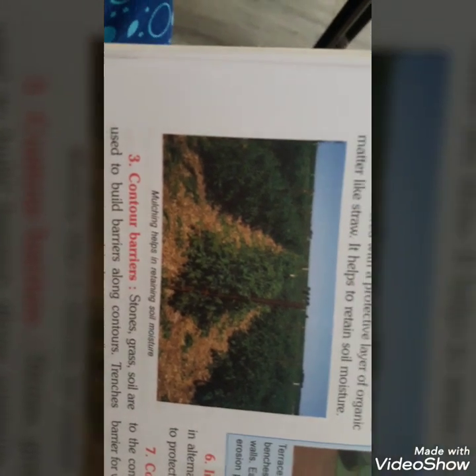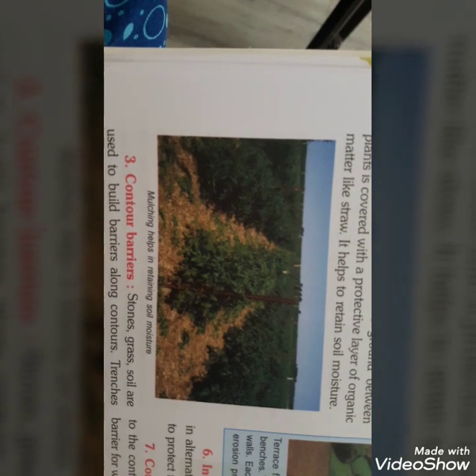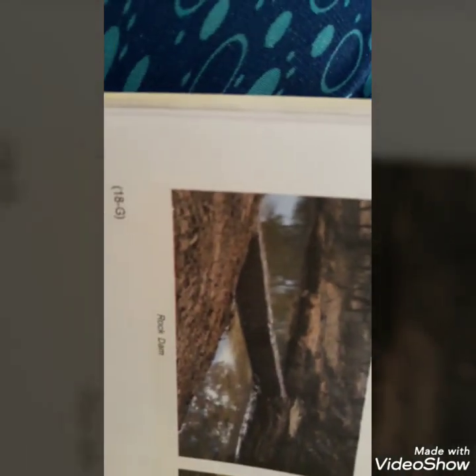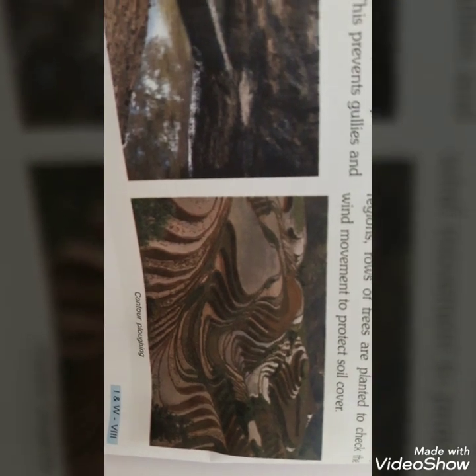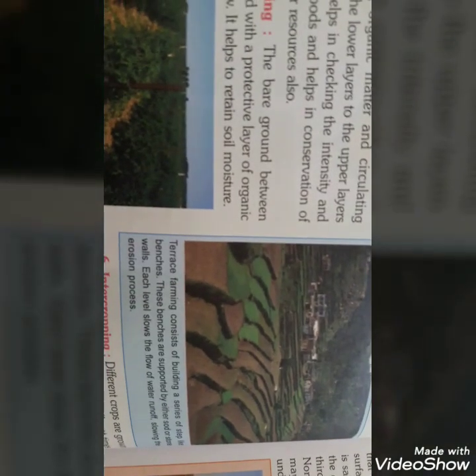Students, this is mulching — जब plants के बीच में organic matter की straw-type layer तैयार की जाती है। This is rock dam — जब पत्थर से दीवार बना दी जाती है पानी का बहाव रोकने के लिए। This is counter ploughing. And this is terrace farming.